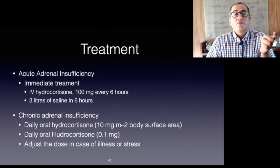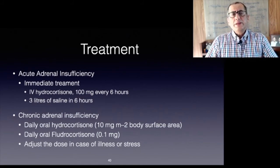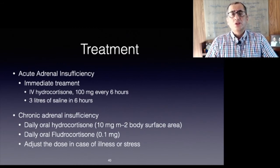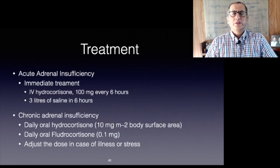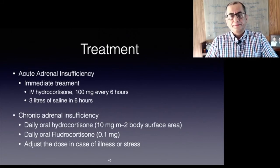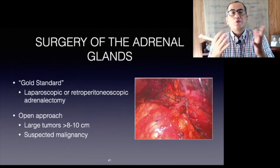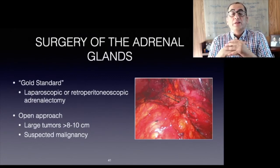Chronic adrenal insufficiency is treated by replacement therapy with daily oral hydrocortisone 10 mg/m² of body surface area and fludrocortisone 0.1 mg. Patients must be advised about the need for lifelong glucocorticoid and mineralocorticoid replacement therapy to prevent an Addisonian crisis, and must be aware of the need to adjust the dose in cases of illness or stress. If patients with adrenal insufficiency are scheduled for surgery, appropriate steroid cover must be administered.